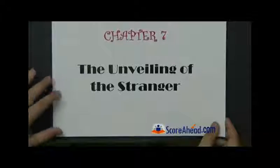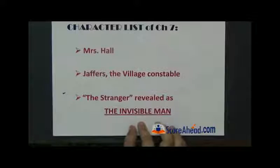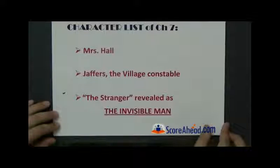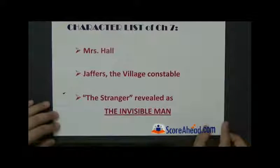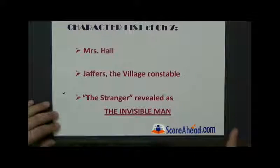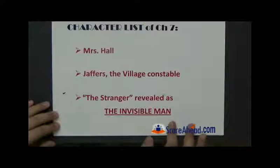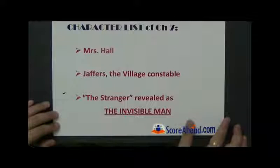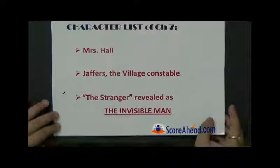Something different is going to happen. Chapter number seven, 'The Unveiling of the Stranger,' and the character list of chapter seven is Mrs. Hall, Chaffers the village constable, and the stranger who will be today in this chapter revealed as the invisible man for the first time.